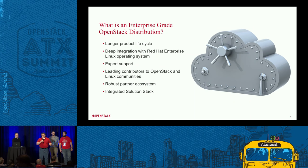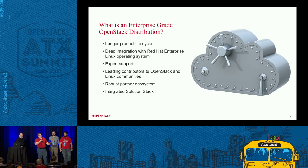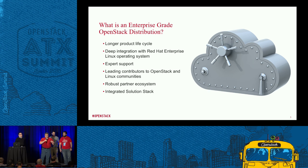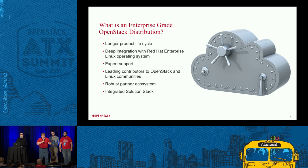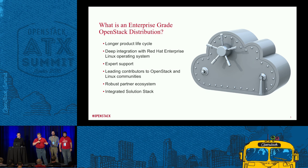What is our enterprise grade OpenStack distribution? First thing is a longer product life cycle. There's a rapid pace of innovation within OpenStack, and that's great for agility — great for trying new things. But when you get to the enterprise, it's not always the greatest thing. One of the things that the enterprise needs is stability. So we try to slow the pace of innovation. We try to productize the upstream code, similar to what we did with Linux, but in such a way that the enterprise doesn't sacrifice stability in the name of agility. We're trying to find a happy medium to make this more consumable for the enterprise.